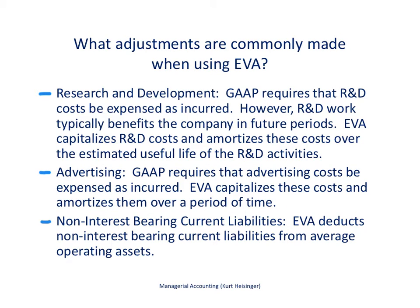Some of the more common adjustments that are made to operating income and average operating assets are shown on this slide. There are three common ones here, though there are many more. The first has to do with research and development. GAAP requires companies to expense research and development costs as they are incurred, so those expenses appear in the income statement during that one period when they are incurred.